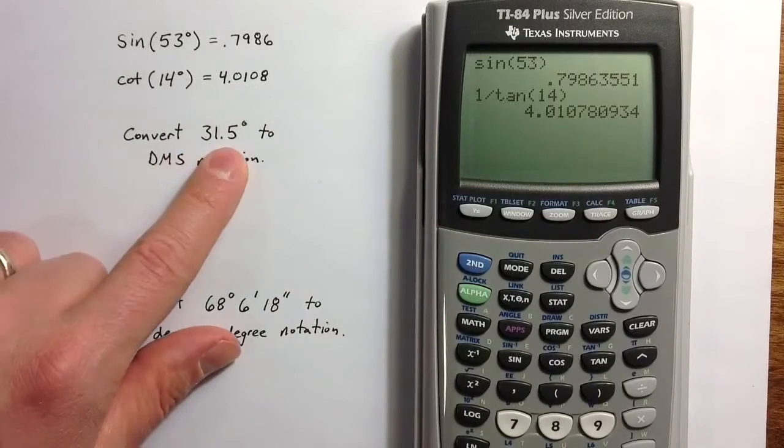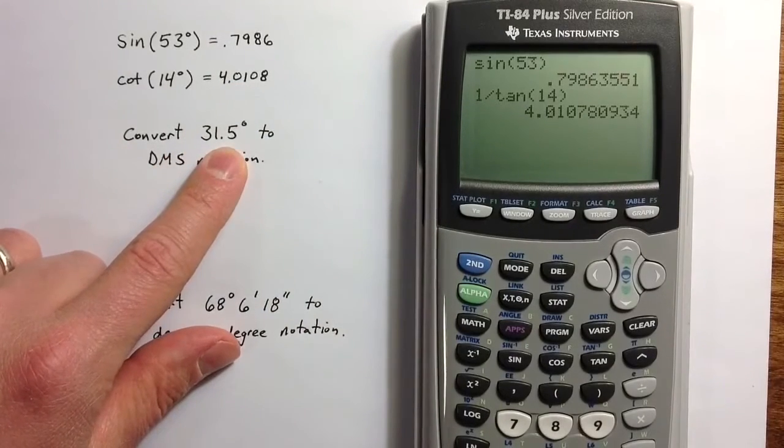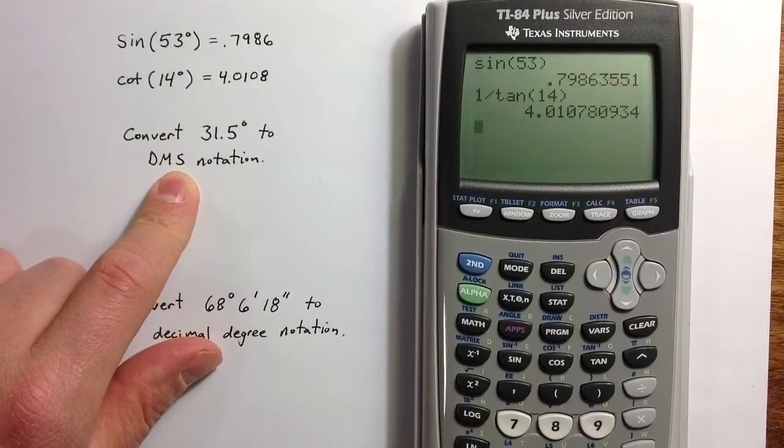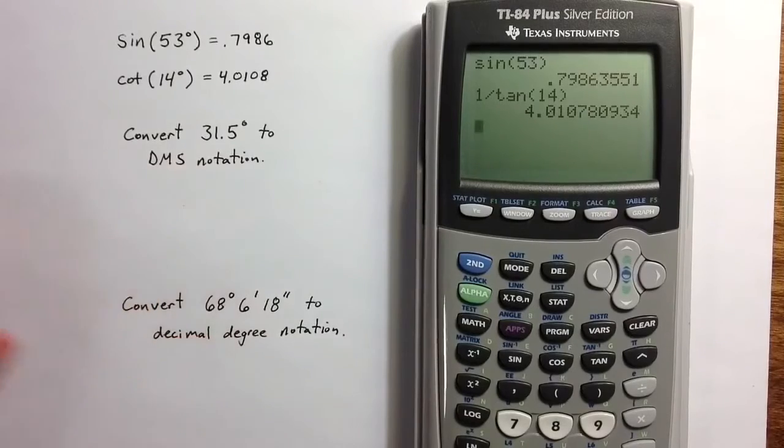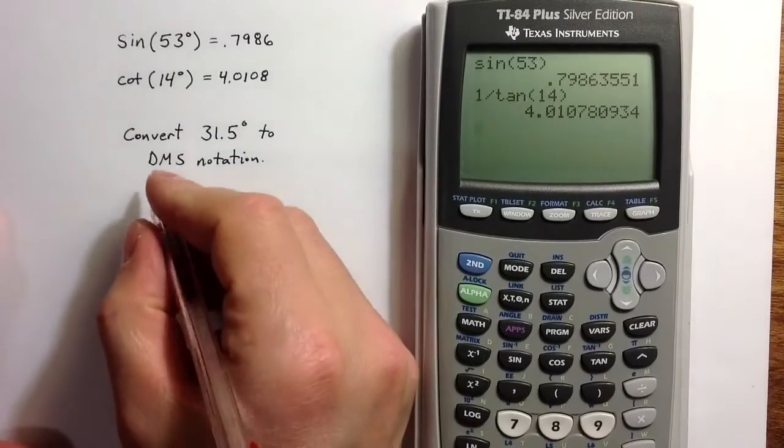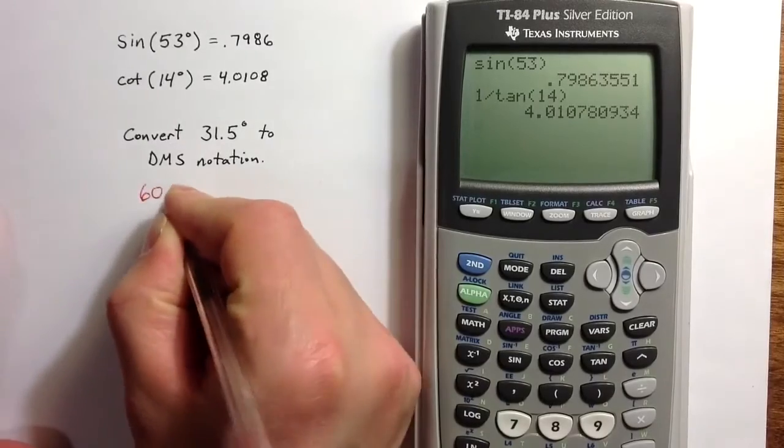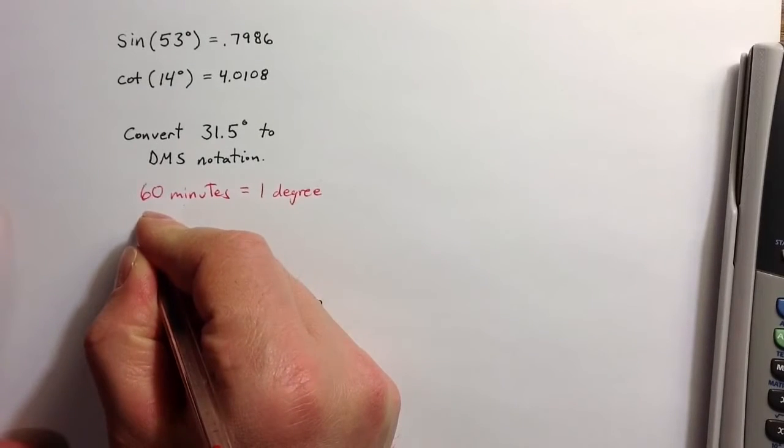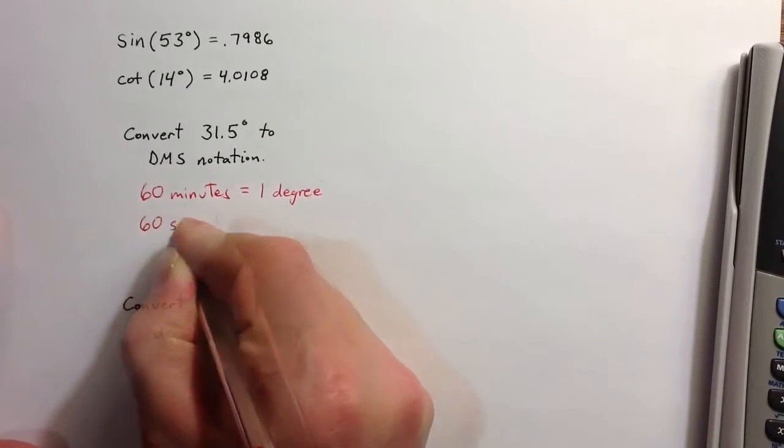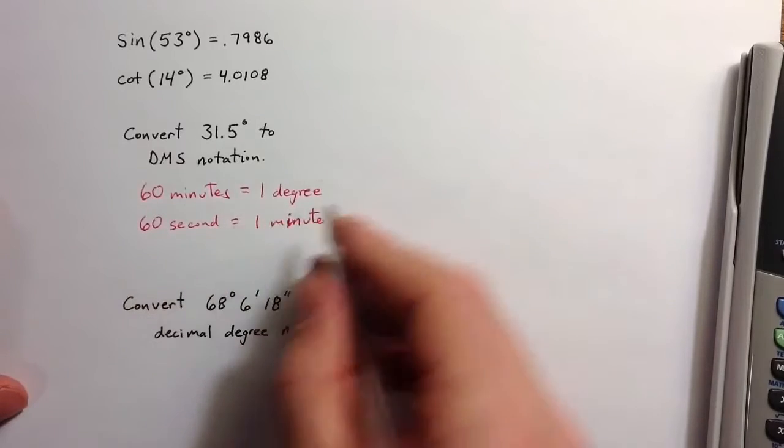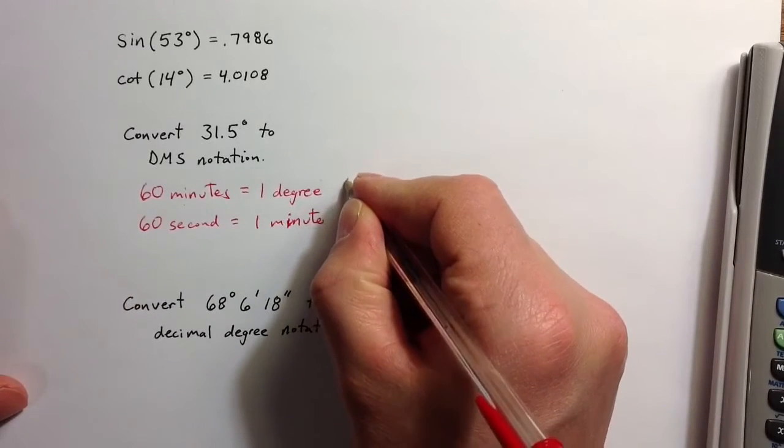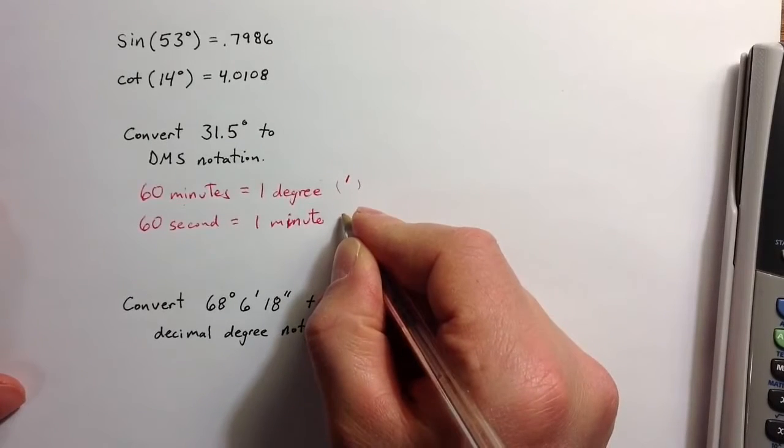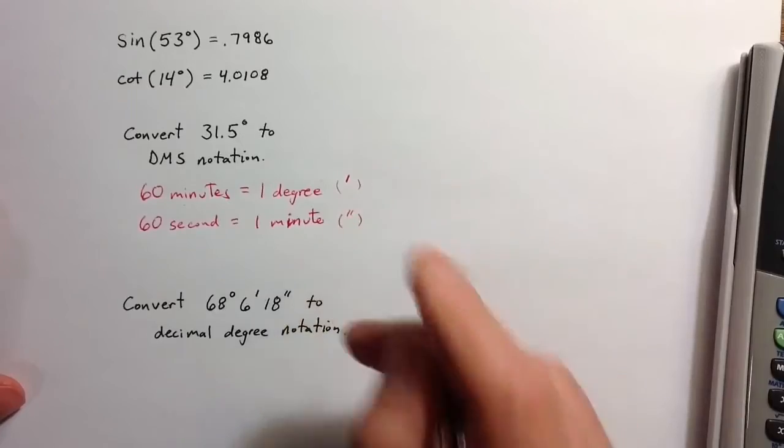Another nice feature: partial degrees can be described in two different ways, either with decimal degree notation or in terms of degrees, minutes, and seconds. As the names suggest, there are 60 minutes in one degree, and there are 60 seconds in one minute. Minutes are denoted with a single apostrophe, and seconds are denoted with double quotation marks.